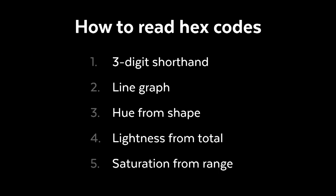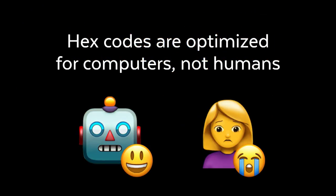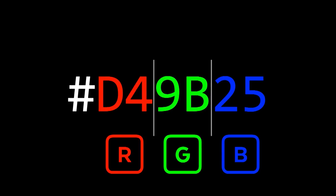This is the process to read a color hex code — just five steps, and we're going to go through each step one by one. The immediate problem with hex codes is that they are optimized for computers, not humans. Hex codes hide their meaning, but we can pull it out. A standard color code is six digits. We'll be working with this one: D4, 9B, 25. Now, those six digits actually represent three things — the values of the RGB color channels. So we can break up the six digits into three groups: D4, 9B, 25.